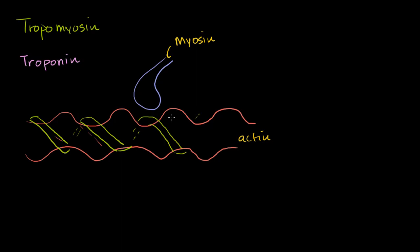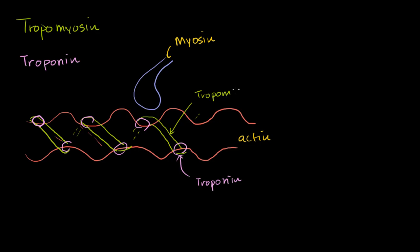The tropomyosin is attached to the actin by another protein called troponin. It's attached at multiple points along the filament by the troponin. You can imagine the troponin as nails into the actin — it dictates where the tropomyosin sits.